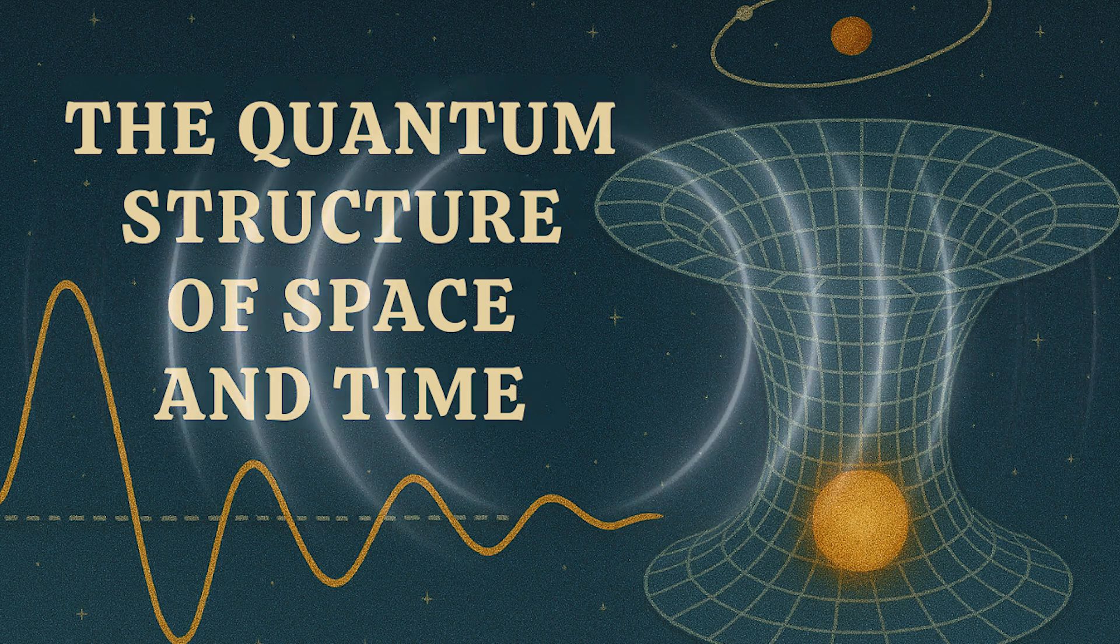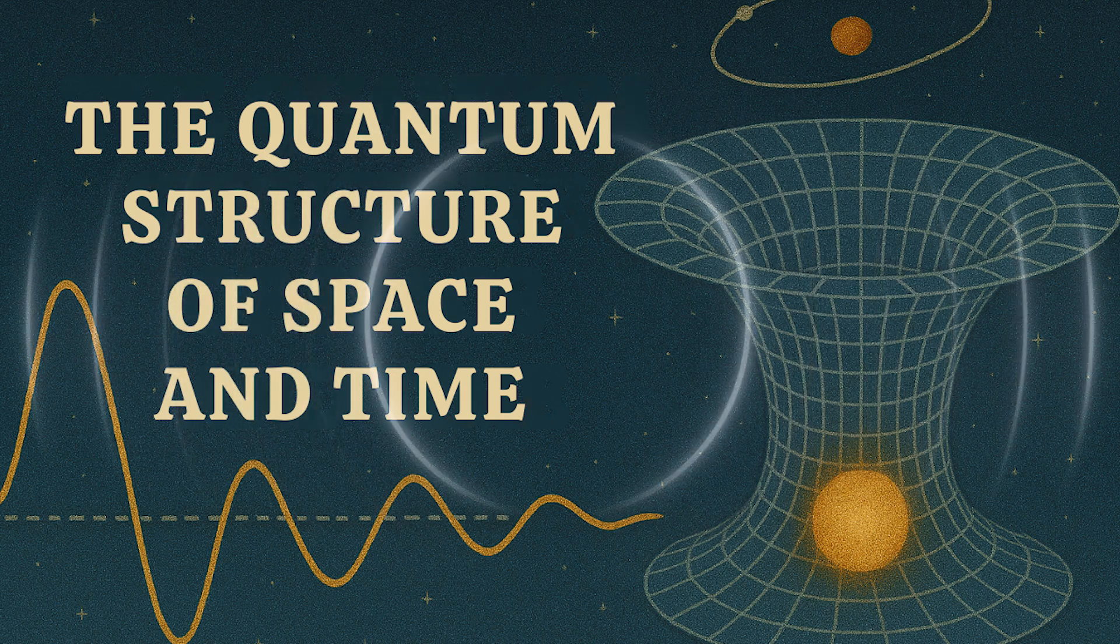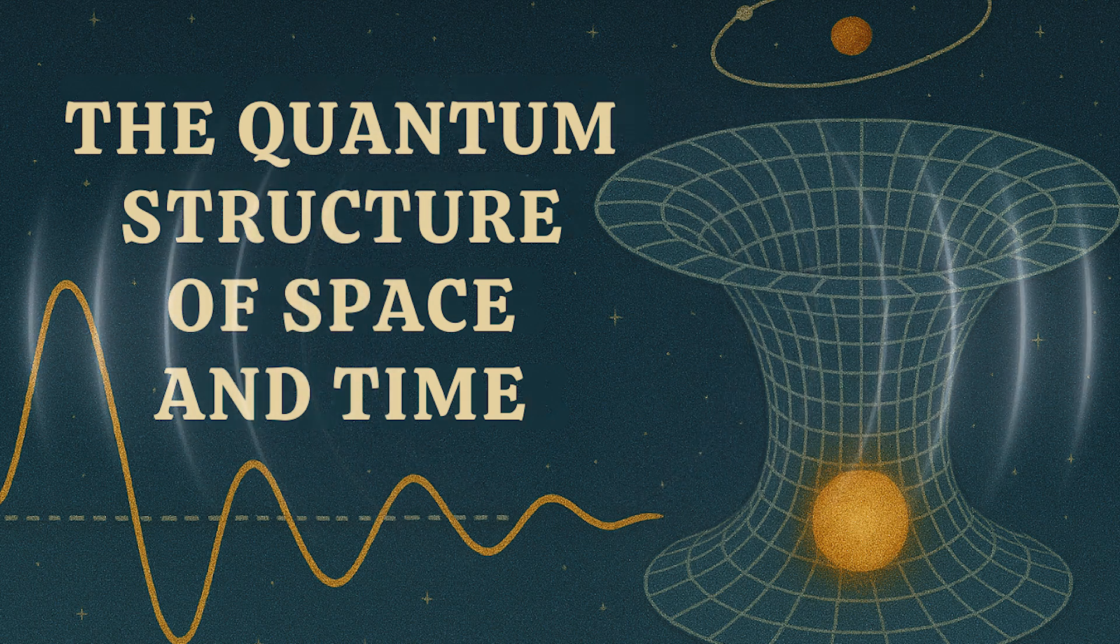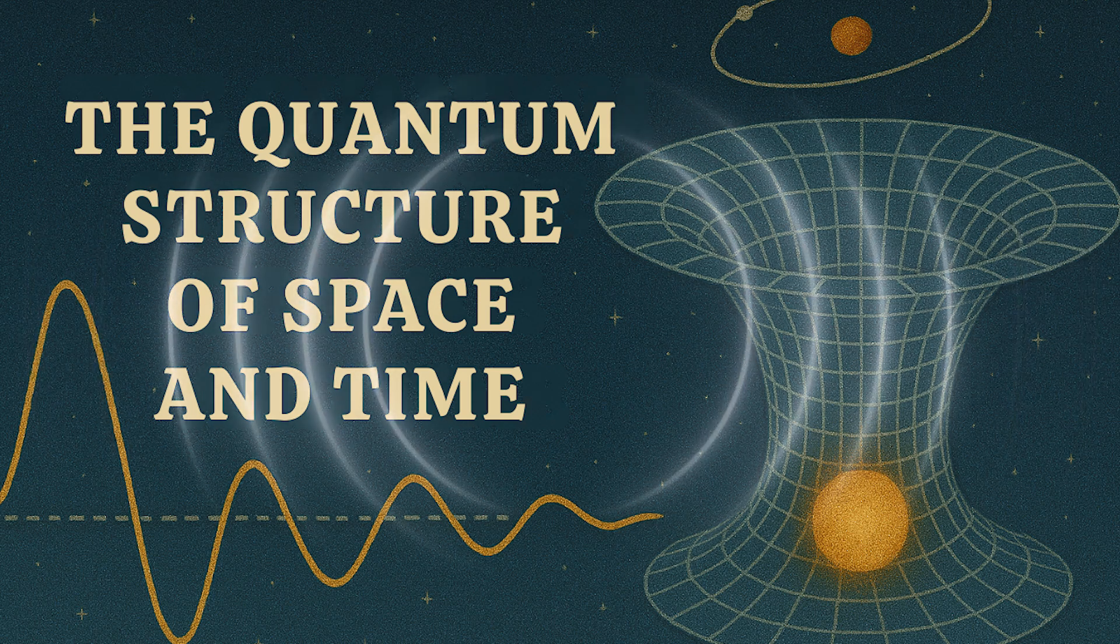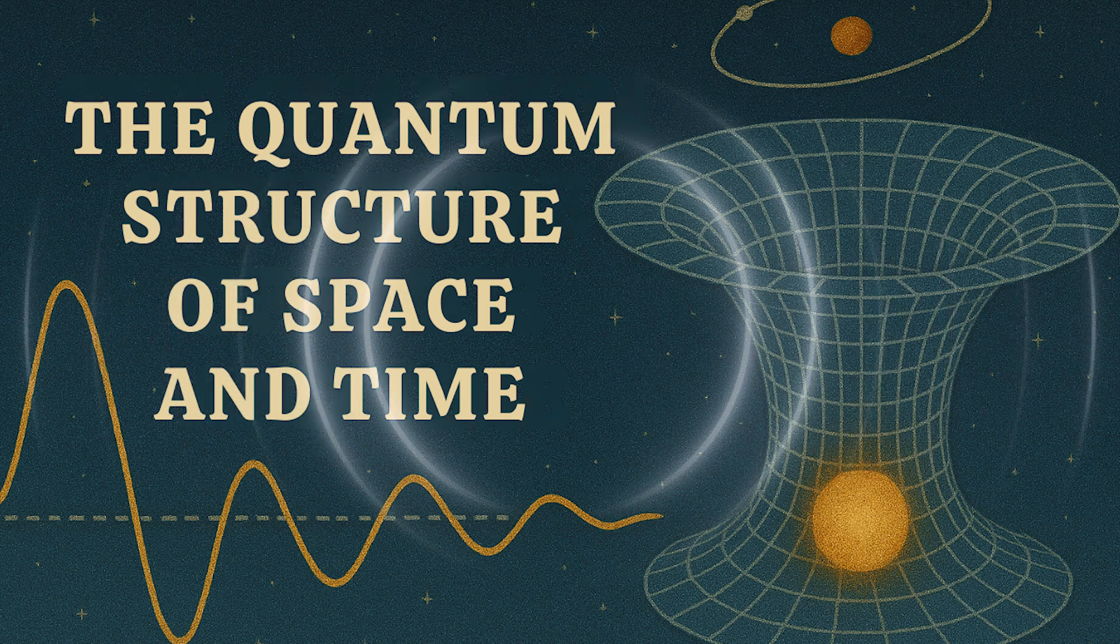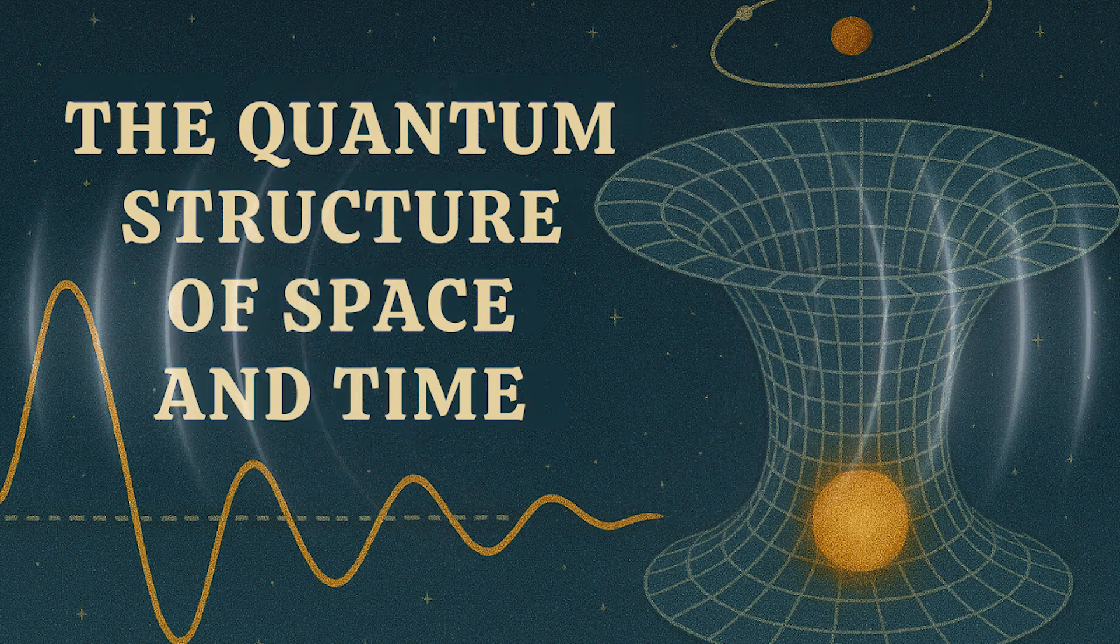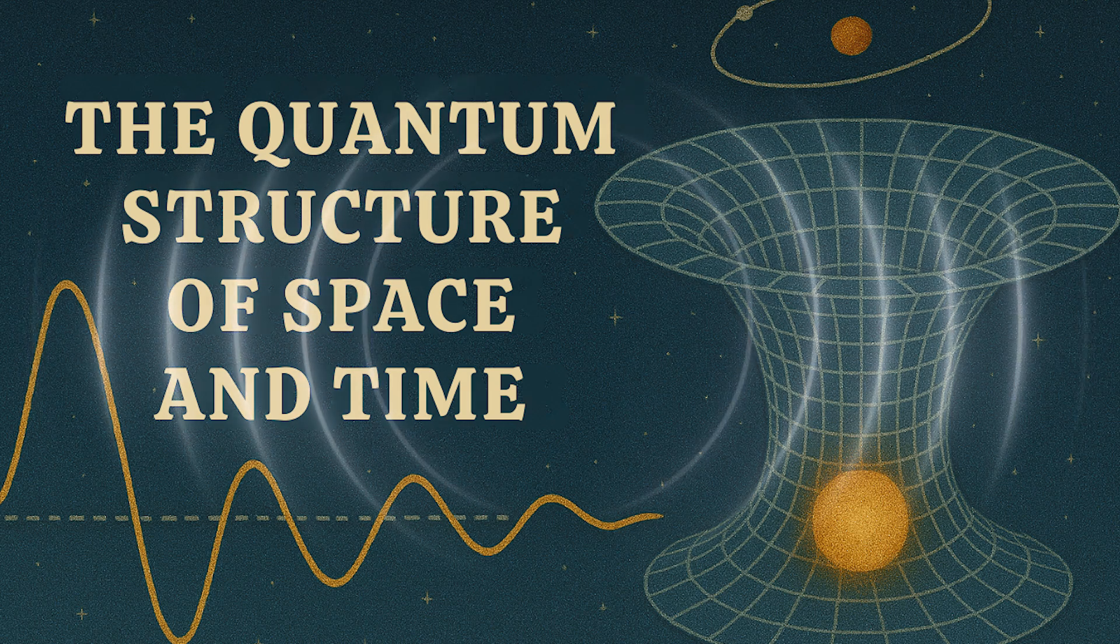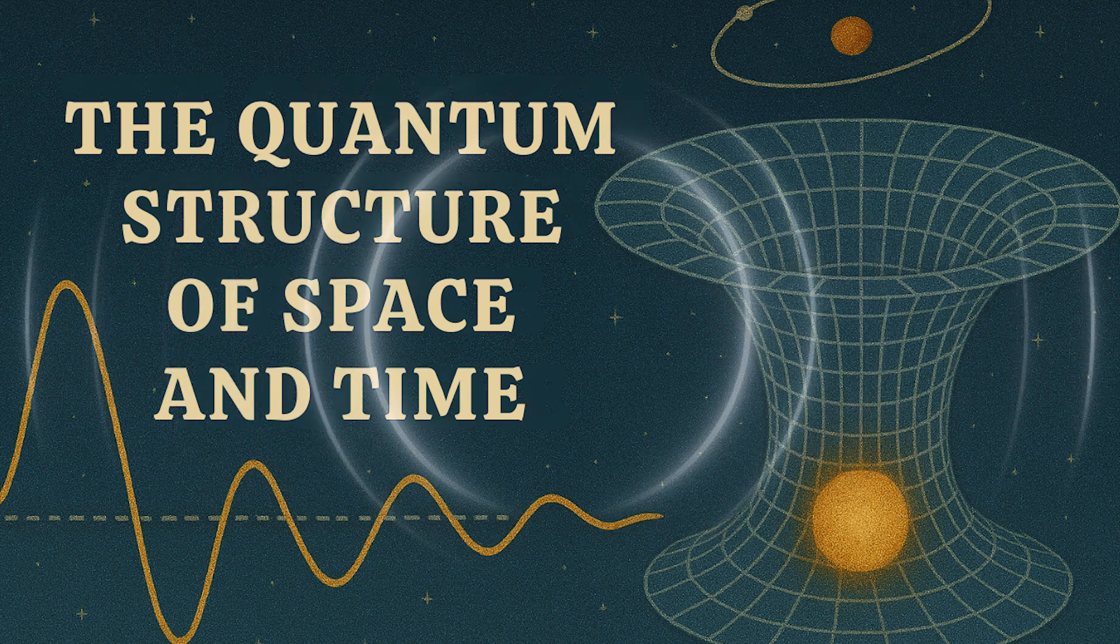So if space can emerge, the obvious next question has to be, what about time? Exactly the question the physicists asked. If space is suspect, why not time? We usually lump them together as spacetime. So if one part is emergent, maybe the other is too. Maybe the whole spacetime concept is emergent. Does that even make sense? How could time emerge? Everything happens in time.